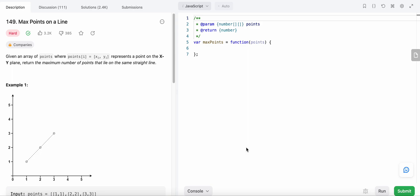Hello friends, today I'm going to solve problem number 194, Max Points on a Line. In this problem, we are given an array of points where each value in the point array is an x and y coordinate